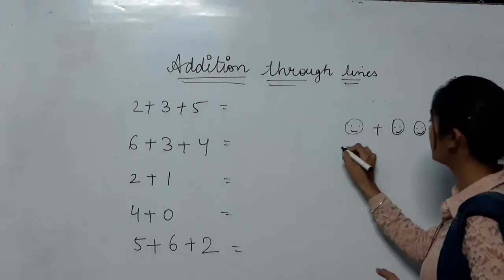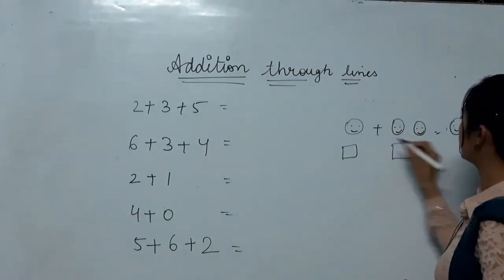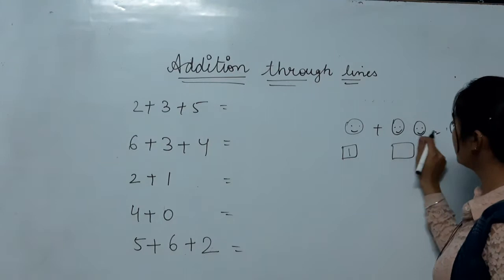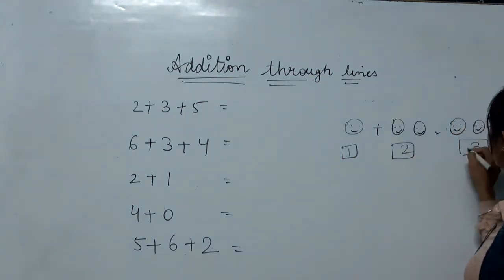So just like here, we count them. You write them. It is one smiley, there are two. One and two will be three. Okay?